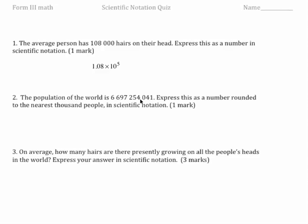Okay, like that. Number two, the population of the world is six billion six hundred ninety seven million two hundred fifty four thousand forty one people. Express this as a number rounded to the nearest thousand people in scientific notation.